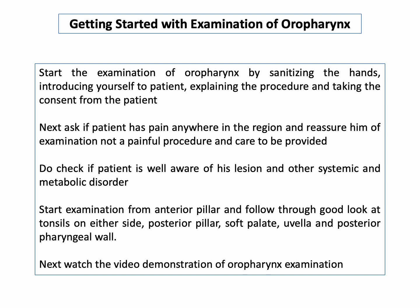To start the examination of the oropharynx, sanitize your hands, introduce yourself to the patient, explain the procedure, and take consent. Ask if the patient has pain anywhere in the region, and reassure them that it is not a painful procedure. Check if the patient is aware of any lesion and other systemic or metabolic disorders. Start examination from the anterior pillar, followed by the tonsil on either side, posterior pillar, soft palate, uvula, and the posterior pharyngeal wall.